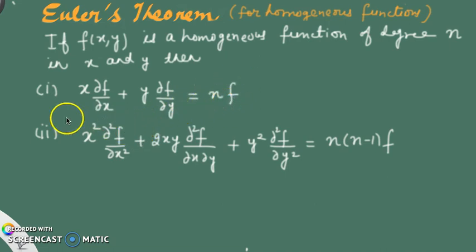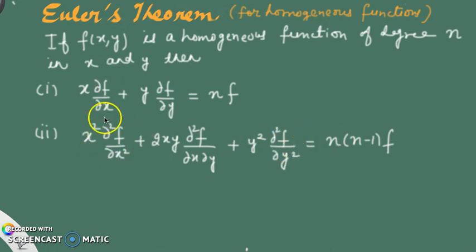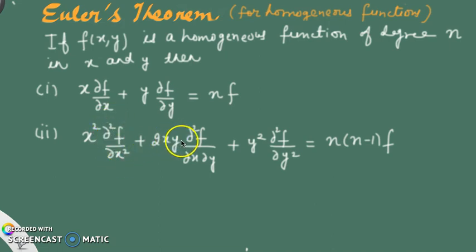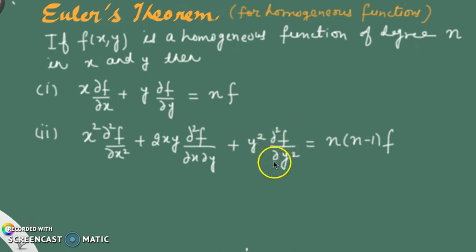The second result is based on the double differentiation of the same function. It says that x squared times the second partial derivative with respect to x, plus 2xy times the mixed partial derivative with respect to x and y, plus y squared times the second partial derivative with respect to y, equals n times n minus 1 times f.